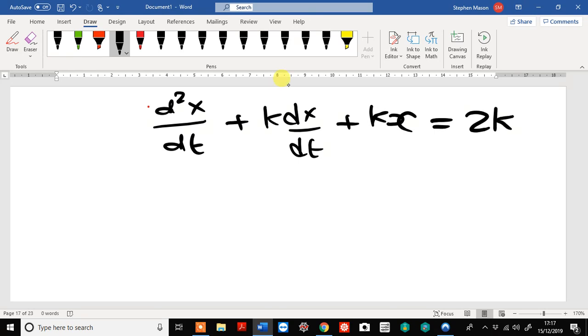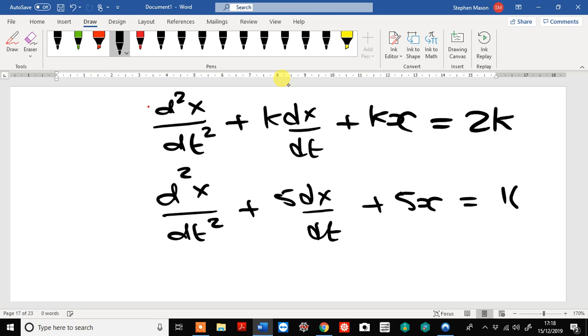So, for example, the equations I have in mind is d squared x by dt squared, plus 5dx by dt plus 5x equals 10.